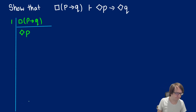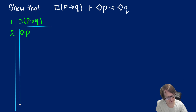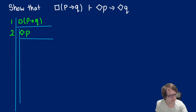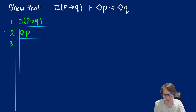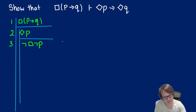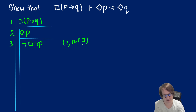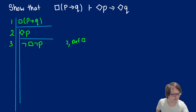That's what we want. Line two starts a new sub-proof. We'll use our definition of diamond P so we can work with boxes, since we have rules for boxes but not for diamonds right now. So diamond P is the same thing as not box not P. This is line three, the definition of the diamond.